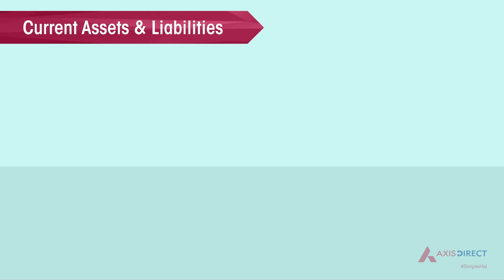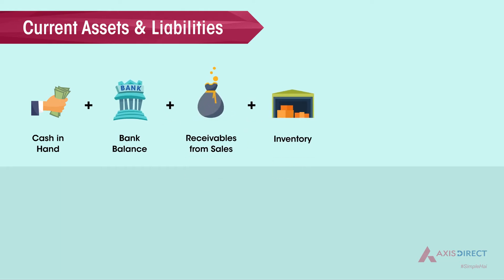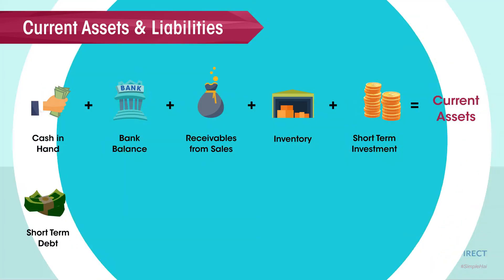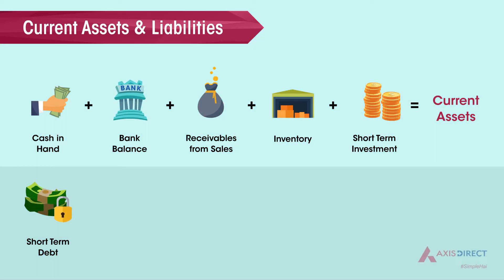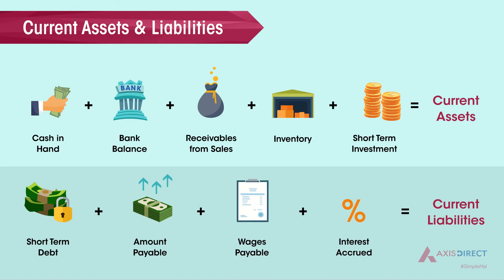Let us look at what current assets and liabilities are. Cash in hand, bank balance, receivables from sales, inventory, and short-term investments are examples of current assets. Short-term debt, amount payable, wages payable, and interest accrued are examples of current liabilities.